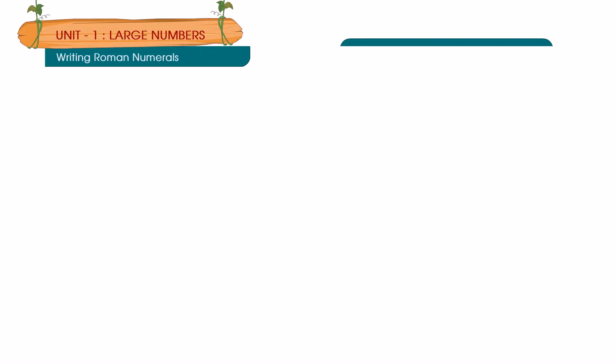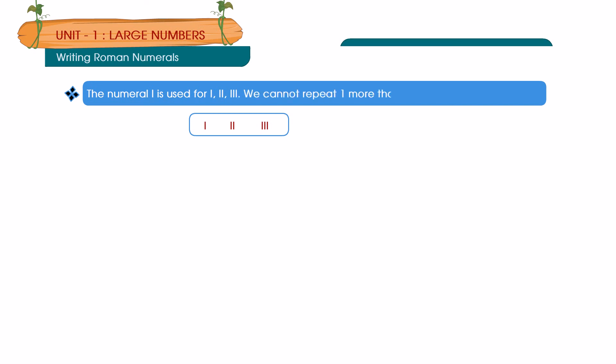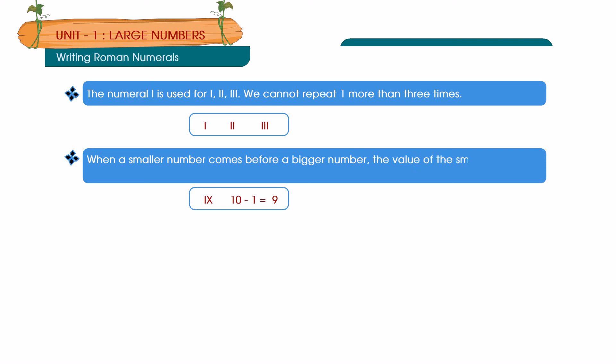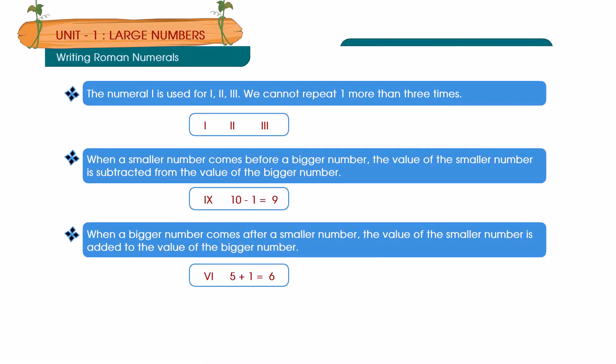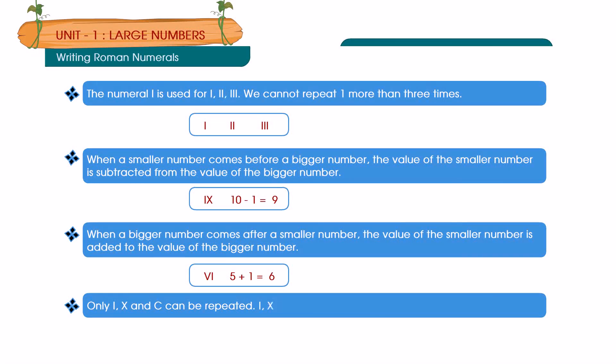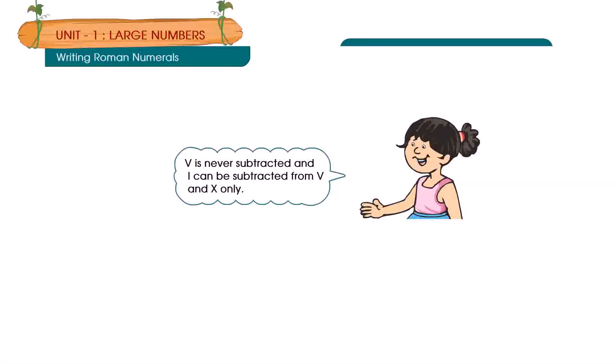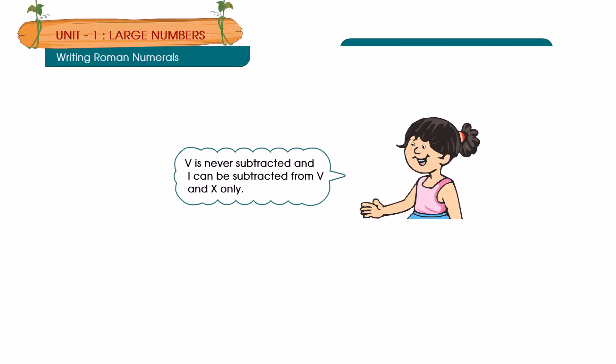Writing Roman numerals: 1) The numeral I is used for 1, 2, 3. We cannot repeat I more than 3 times. 2) When a smaller number comes before a bigger number, the value of the smaller number is subtracted from the value of the bigger number. 3) When a bigger number comes after a smaller number, the value of the smaller number is added to the value of the bigger number. 4) Only I, X and C can be repeated. I, X and C cannot be repeated more than 3 times. V is never subtracted and I can only be subtracted from V or X.